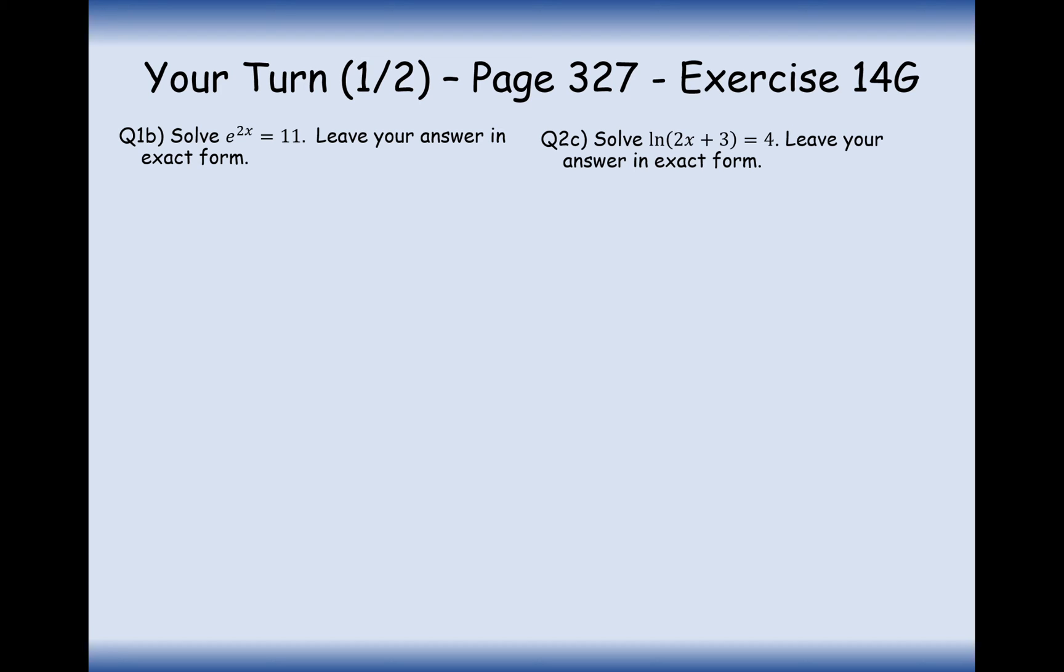Your turn to have a go at some questions yourself. Pause the video and see how far you get. Well done for having a go at these questions here. So we first start off with e to the 2x equals 11. And the first thing we need to do is do the inverse operation of e-ing both sides, which is to ln both sides. So ln both sides, we'll cancel out the e. So we're left with just 2x equals ln of 11. And then we half both sides to get a half ln 11. So that's the final answer to question 1b.